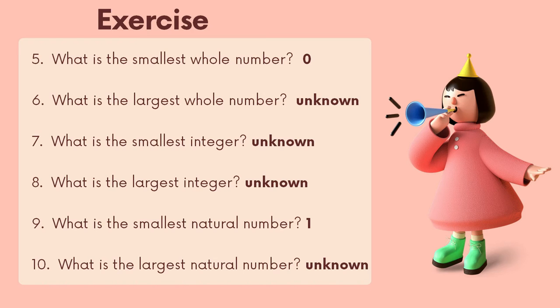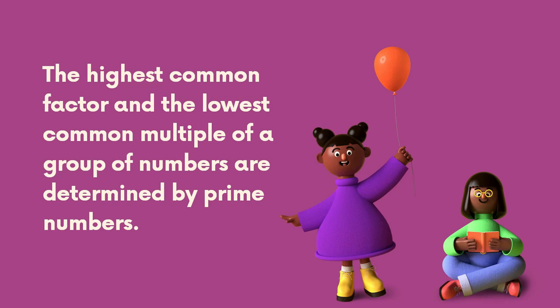To remember that zero is a whole number, look at the O in 'whole.' The highest common factor and the lowest common multiple of a group of numbers are determined using prime numbers.